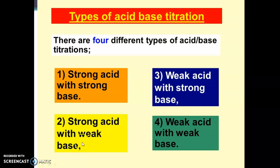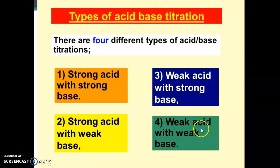There are four classifications of acid-base titrations: first, strong acid with strong base; second, strong acid with weak base; third, weak acid with strong base; and fourth, weak acid with weak base. Strong acid has two types, weak acid has two types, giving a total of four classifications.